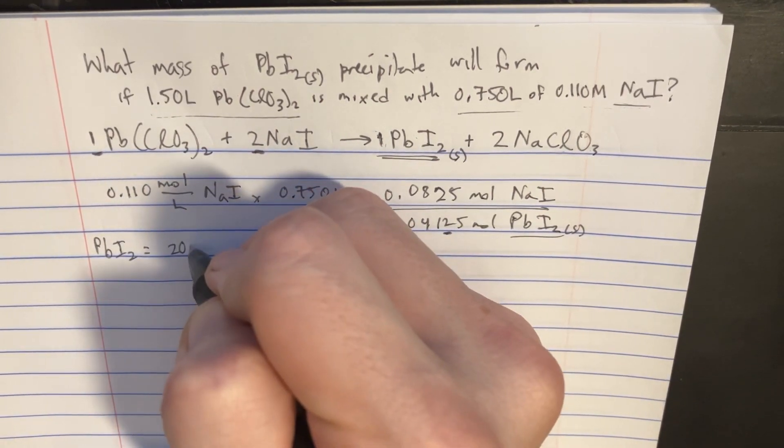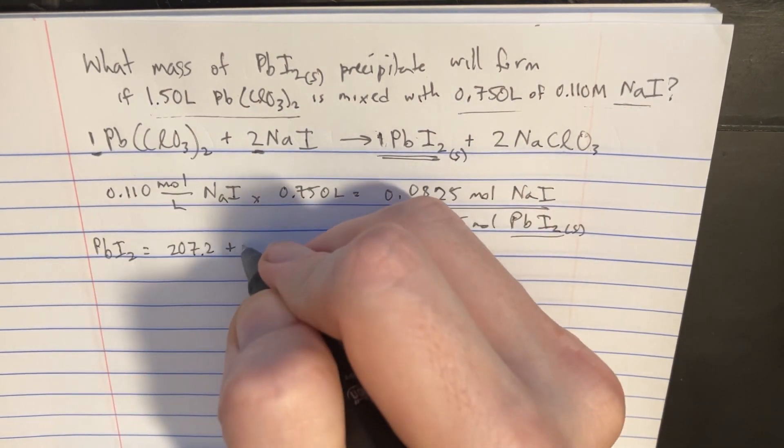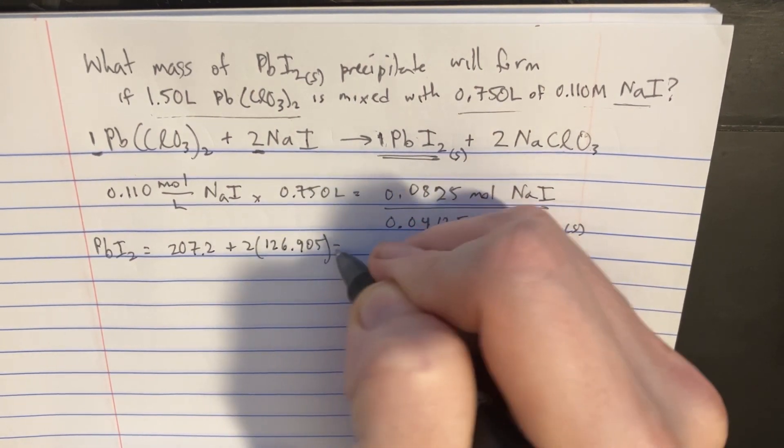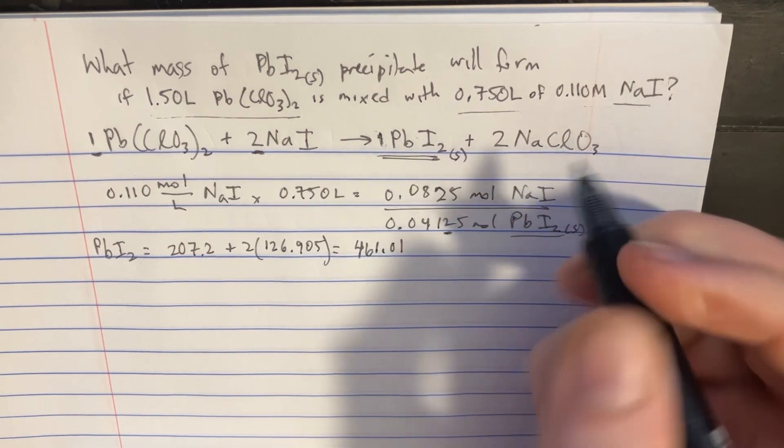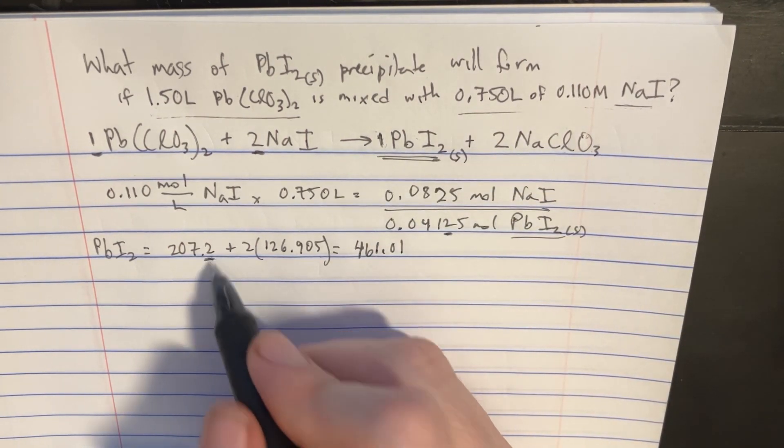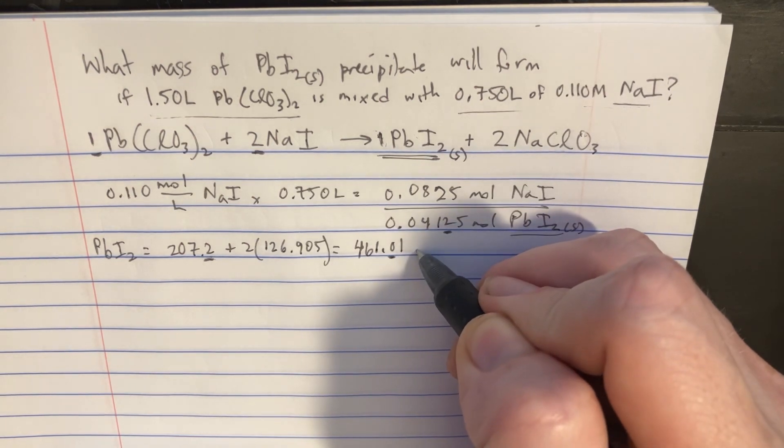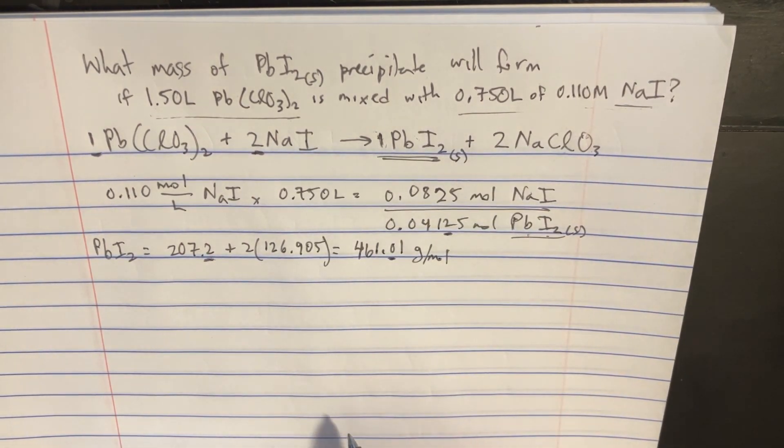and then the I is going to be 2 times 126.905, and that should yield 461.01. I'm noticing we only have one decimal in our final answer. So this is essentially the grams per mole of the lead iodide.